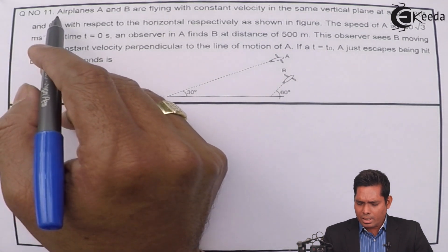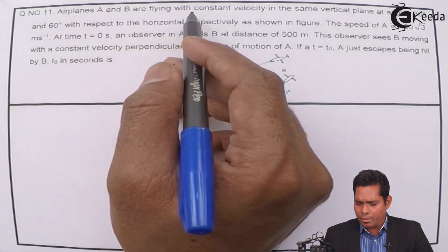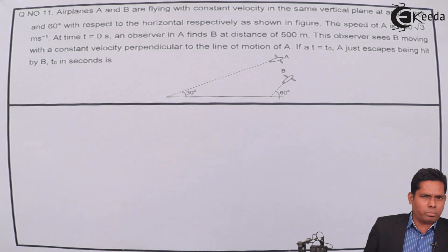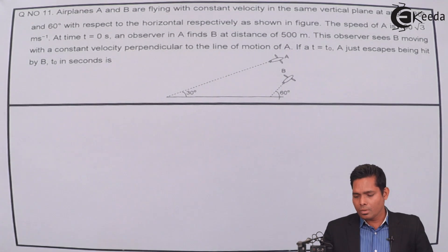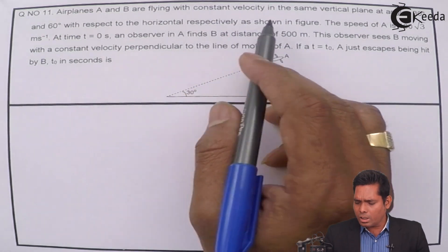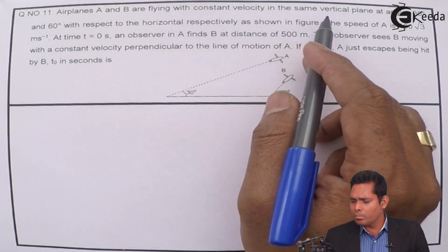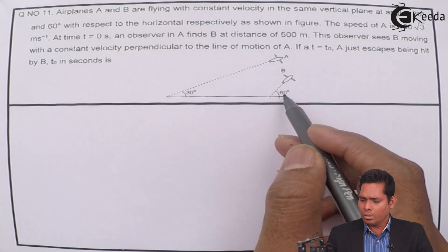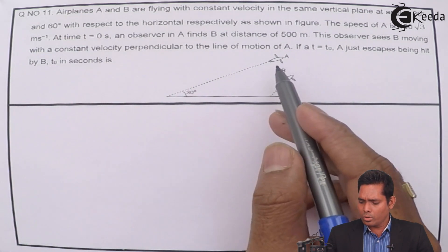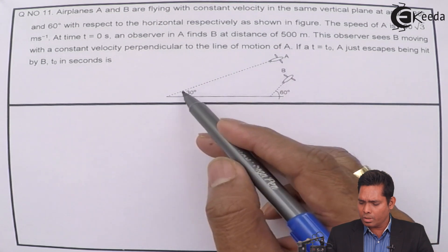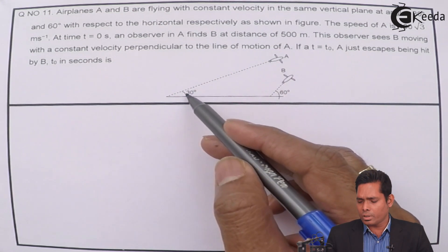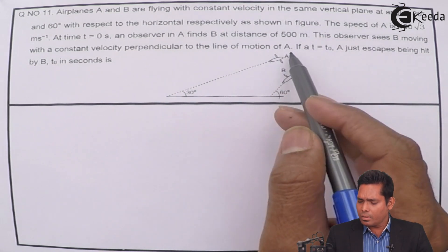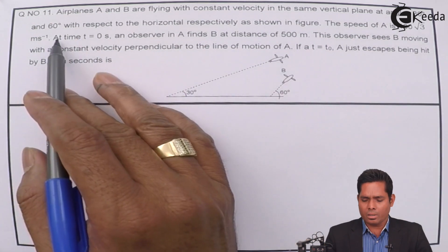The problem says that airplanes A and B are flying with constant velocity in the same vertical plane at angles of 30 degrees and 60 degrees respectively. So A is moving at a horizontal angle of 30° and B is moving at 60°. The speed of A is given as 100√3 meters per second at time t = 0.